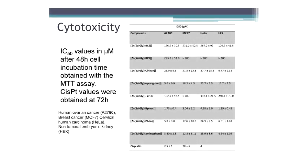We studied different cell lines — the same ovarian cancer cell lines, breast cancer, cervical carcinoma cells, and non-tumoral embryonic kidney cells. In some cases we have very poor values, with IC50 values around 100–200 micromolar. But then we have some cases — for instance with epoxyphen and bathophenanthroline — that show some good results, and in some cases they were better than those obtained for cisplatin.